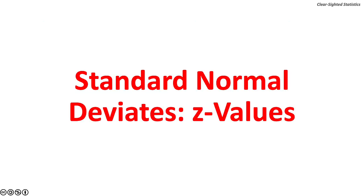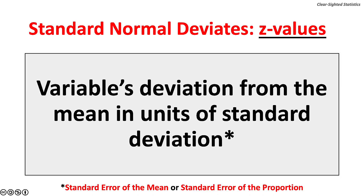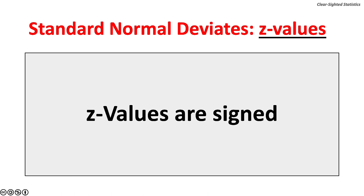Let's discuss standard normal deviations or z-values. With population data, z-values measure a variable's deviation from the mean in units of standard deviation. There are a variety of formulas for z-values. Standardized units of the mean or proportion are used for samples, depending on whether the data are for means or proportions. These z-values will be covered in later chapters. Z-values are signed: when a variable is above the mean, z-values are positive; when below the mean, z-values are negative; and when the variable equals the mean, the z-value is zero.